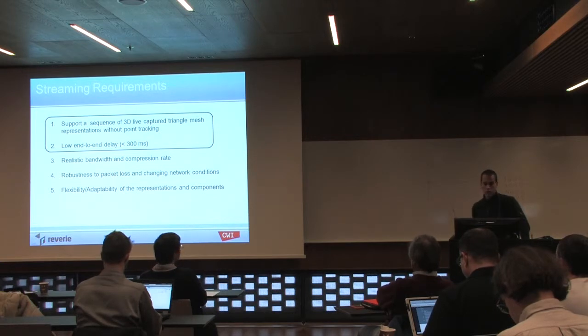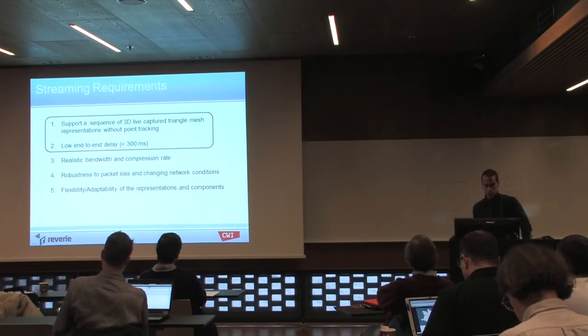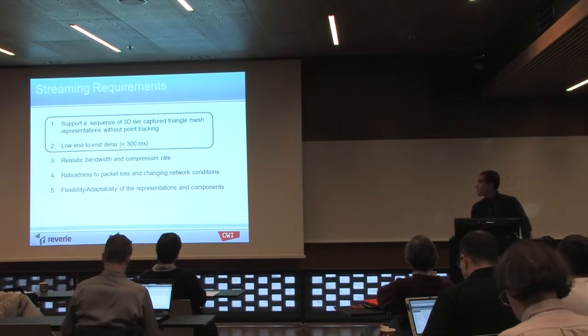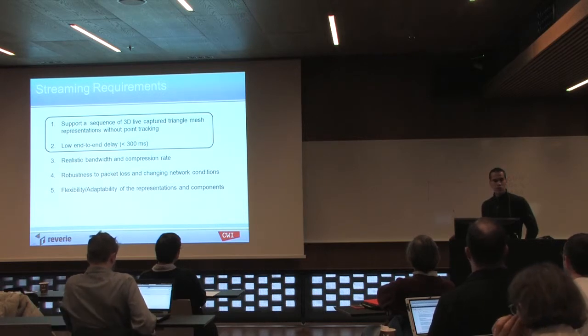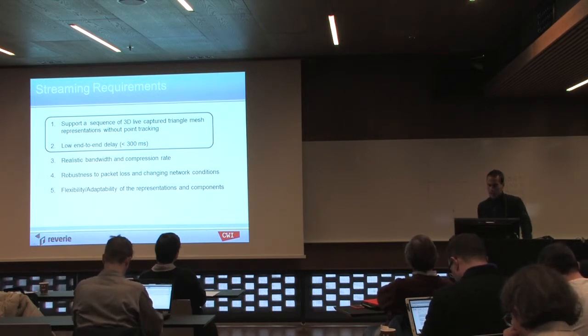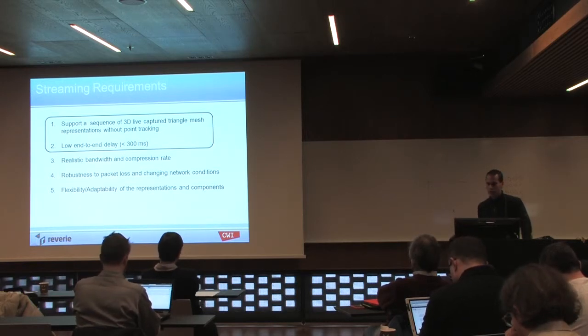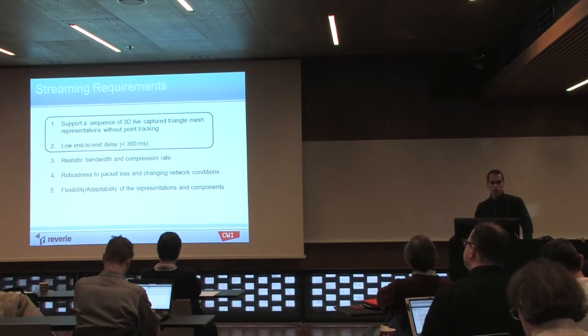Third, we need realistic bandwidth and compression rate for the Internet, which is quite a challenge. Clara Naarsstedt's group has been actively working on this topic with many innovations on different parts of this challenging problem. But actually a very challenging thing is also to have robustness to packet loss, which is challenging because this 3D geometry is not really supported by decades of research in error-resilient video coding, which allow some packets to be dropped without significant malfunction in the decoder. And fifth, we also want to have some flexibility and adaptability. In Reverie we're not yet completely sure which representation we want to use, so we want to develop a streaming method applicable to different representations—it can be point clouds or other 3D representations.